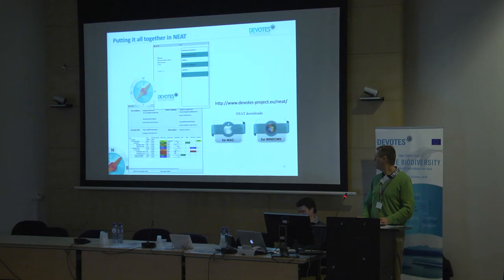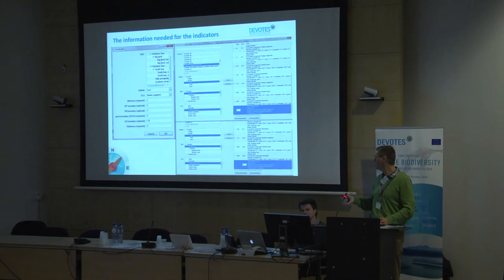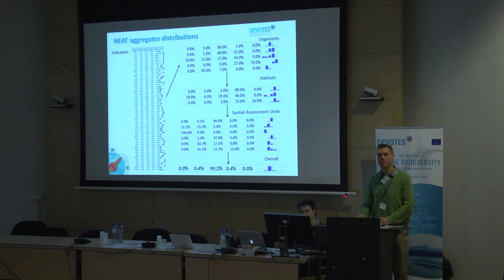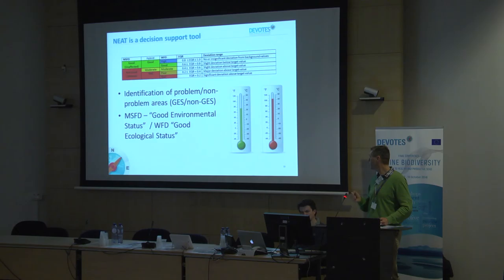We put this together in the tool called NEET, introduced on Monday, so I won't go into too many details, but it's already available for download. It's based on indicator information — you need to enter information about how to scale it to a common scale, its value, and its uncertainty given by the standard error. NEET is not just doing calculations on indicator values — it's actually aggregating indicator distributions, which is a novelty. So we can also assess the confidence of our decisions, and because there are implications of whether we achieve good or not good status, NEET can be considered a decision support tool.